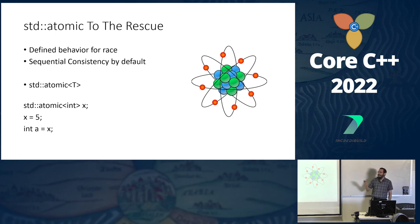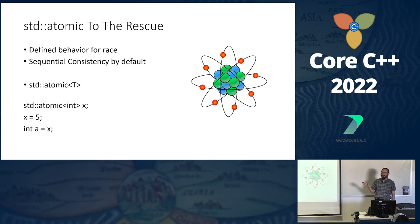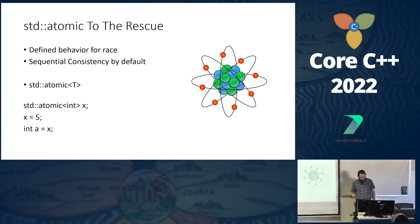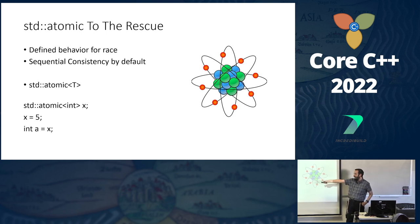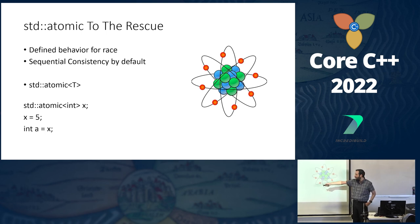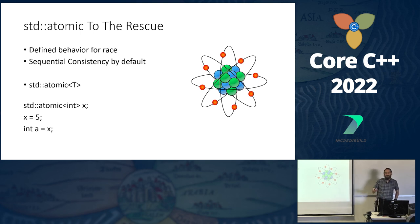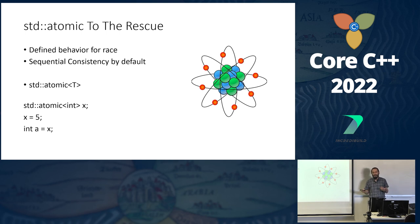Not all is lost — std::atomic comes to the rescue. It gives us defined behavior for data races, so we won't have this kind of undefined behavior. By default we get sequential consistency, which I'll describe soon. It's easy to use correctly: just write std::atomic<int> x, and then accesses like x = 5 or int a = x are automatically atomic — no other change required.